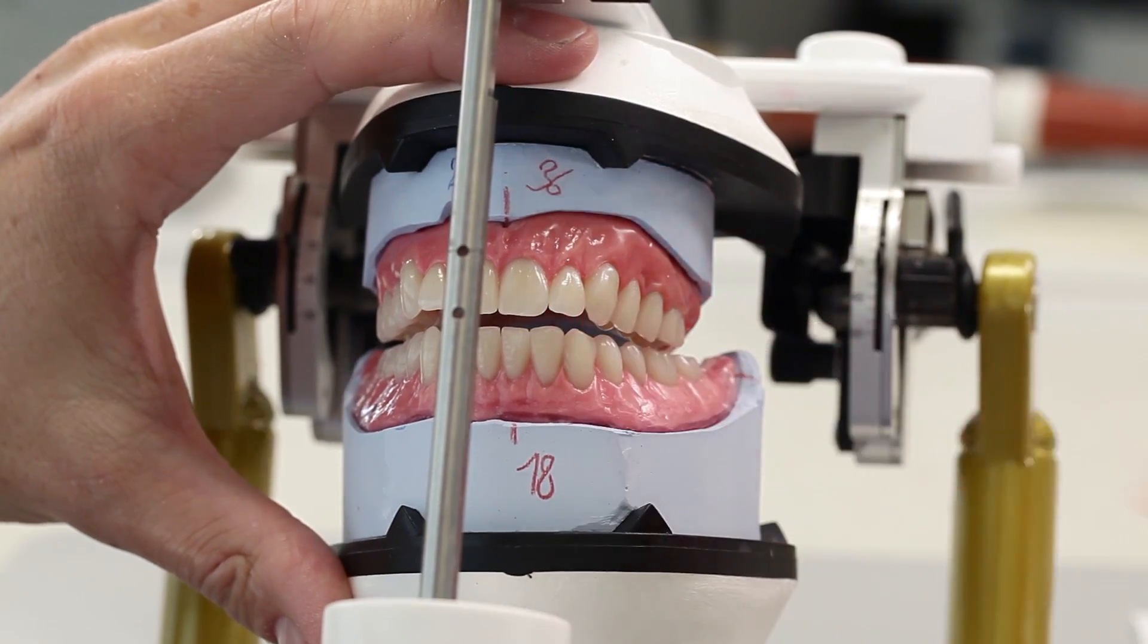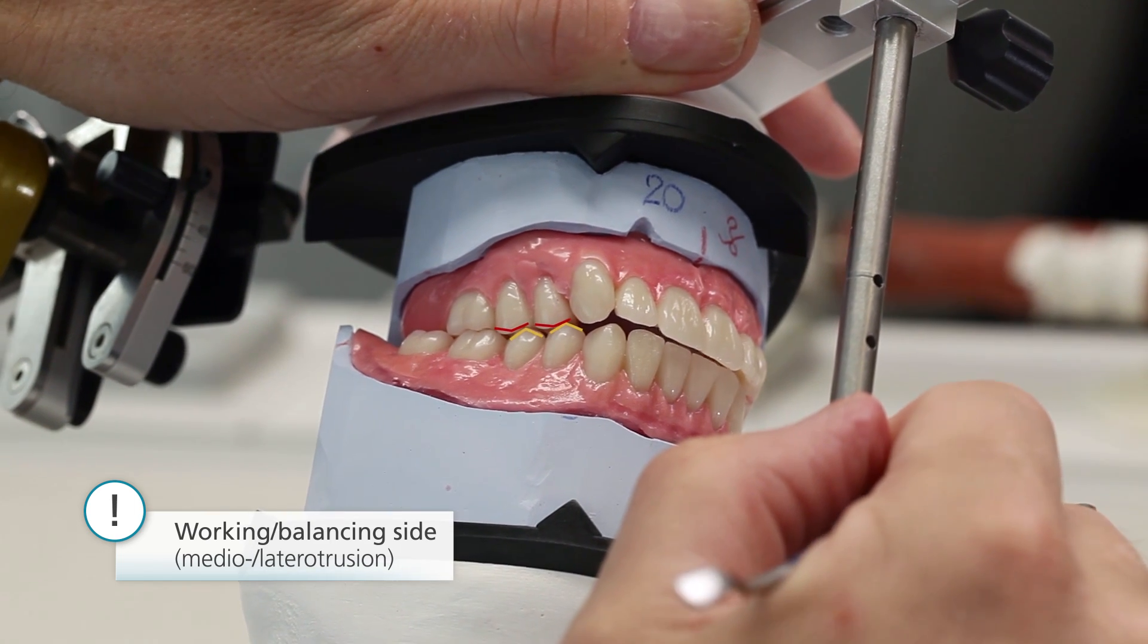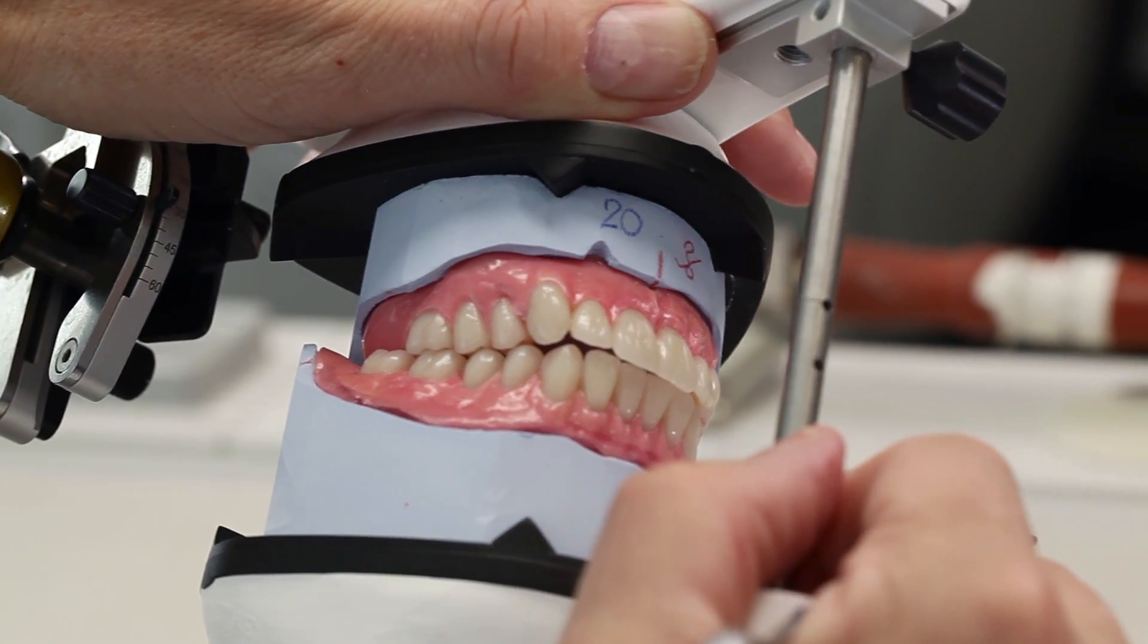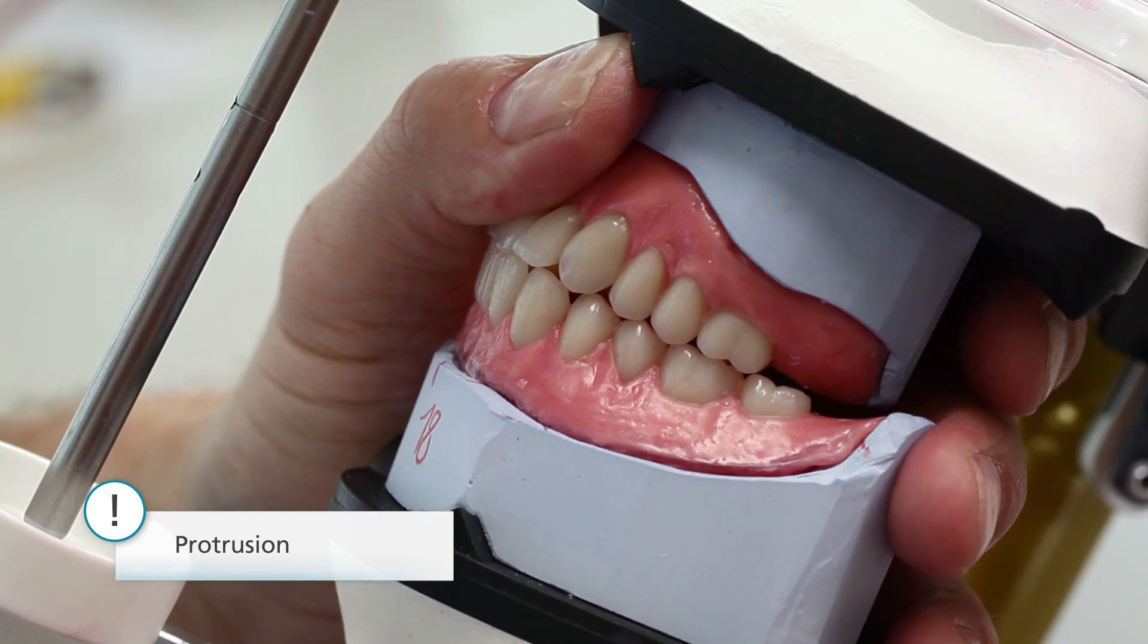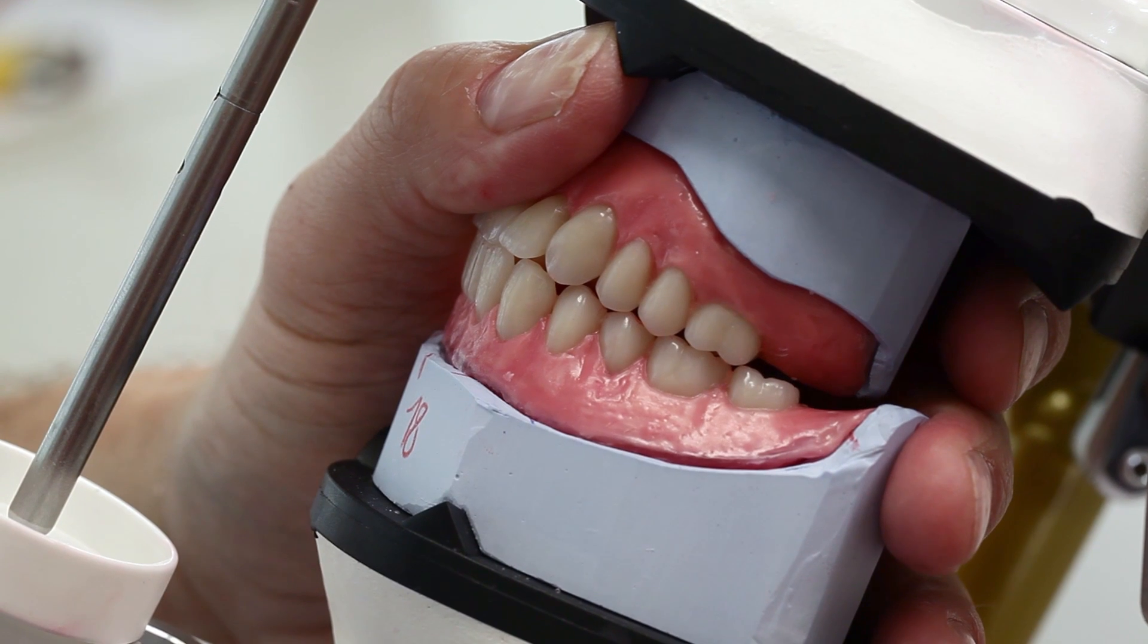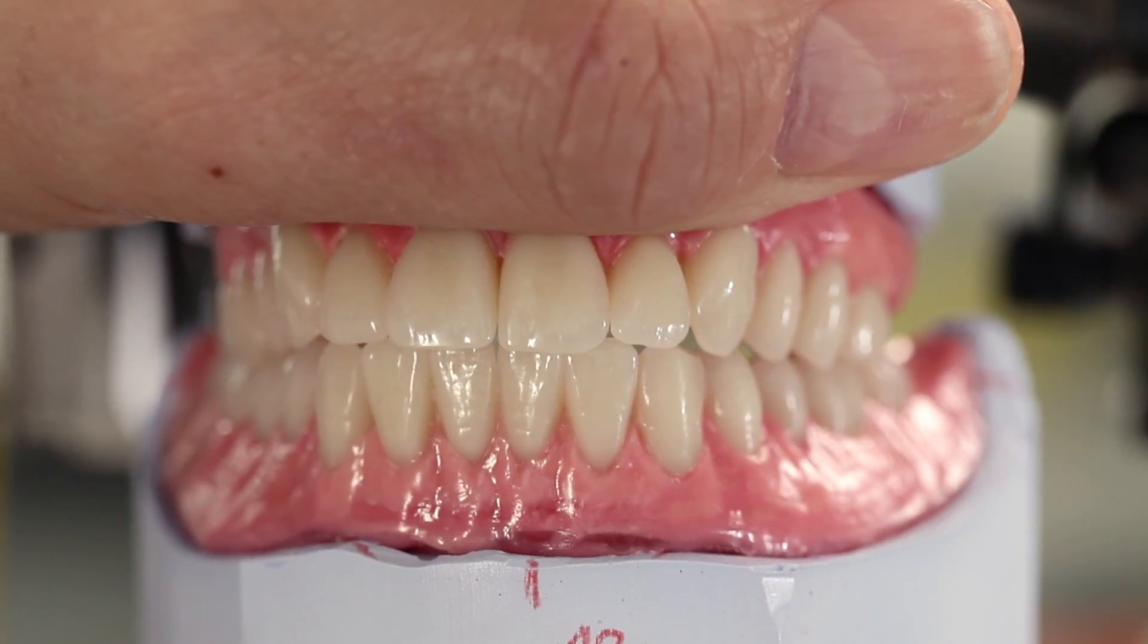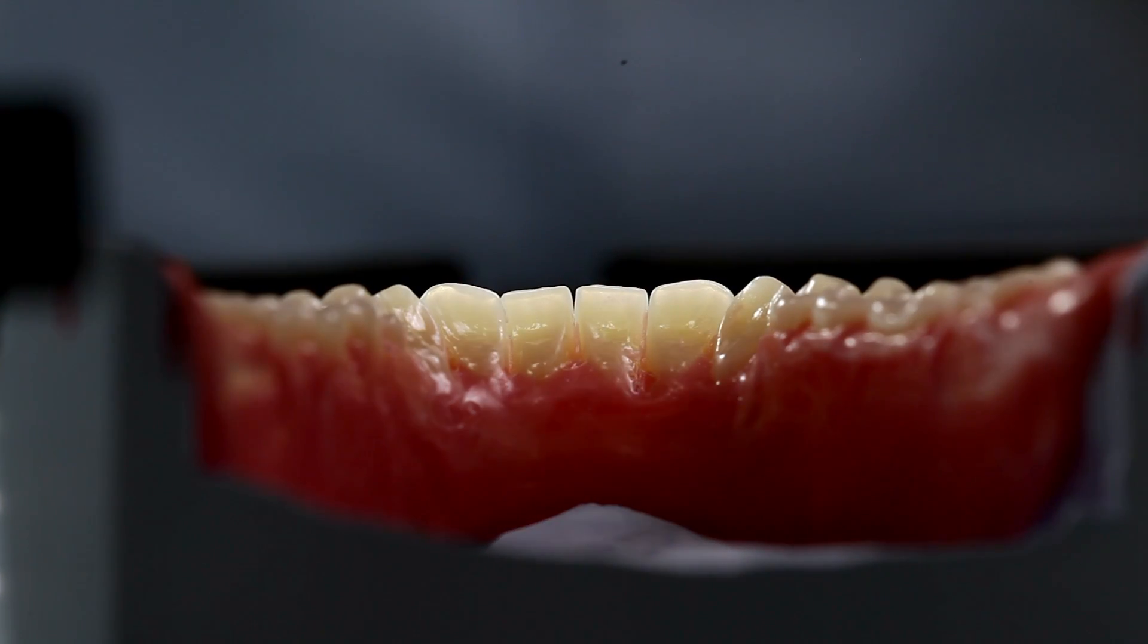Check whether the buccal mesial surfaces of the upper premolars slide over the buccal distal edges of the lower premolars on both sides. The mesiopalatal cusps of the upper molars slide on the disto-buccal cusps of the lower molars. The disto-buccal facets of the upper premolars slide over the mesiobuccal facets of the second premolar and the first molar. Set up or grind in the anterior teeth in such a way that they come into group contact with the posterior teeth. Premature contacts must be avoided. Prevent a mere anterior and canine guidance in any case.